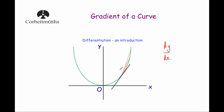In this video, we're going to look at how to find the gradient of a curve at a particular point. To do that, first we find dy by dx by differentiating, and then you substitute in the x-coordinate of the point where you want to find the gradient. Substituting into dy by dx will tell you the gradient of the curve at that point, which will also be the same as the gradient of the tangent at that point.